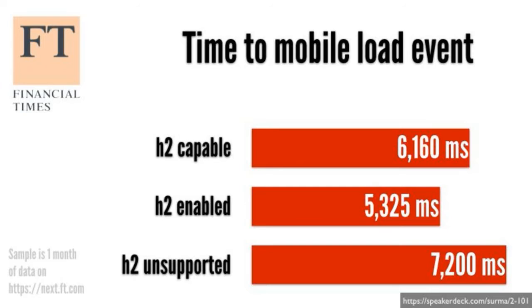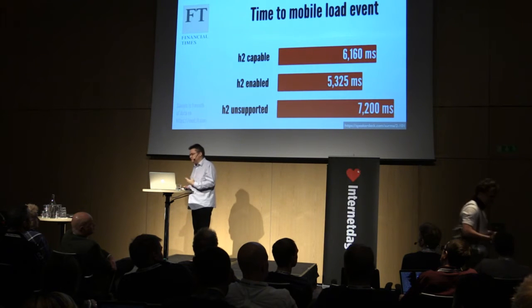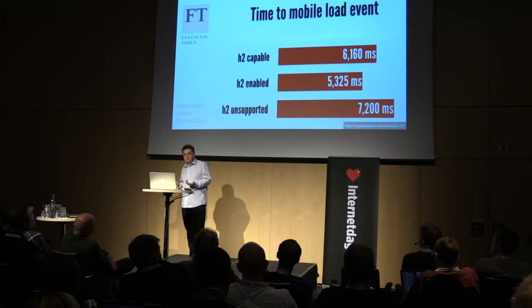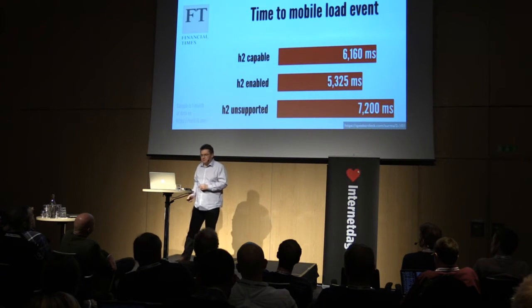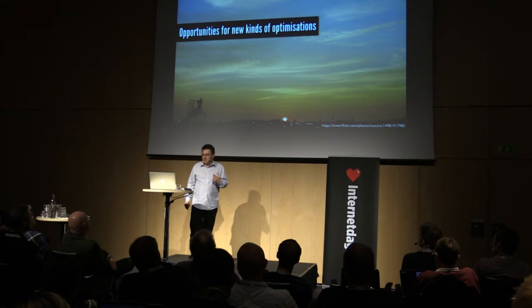Some real-world numbers: the FT are experimenting with HTTP2 on their next platform. They have a somewhat unusual setup — serving their origin from Fastly, which isn't HTTP2 capable, but serving all their images and other resources from Akamai. Based on that data, people who are HTTP2 enabled are getting a faster experience. We're beginning to see that in the real world, HTTP2 delivers some of its promises — and this is just using it as a straight like-for-like replacement of HTTP 1.1, not yet using any of the new optimizations.